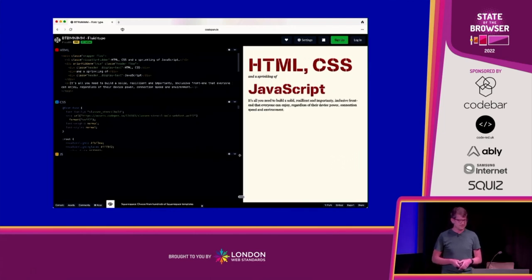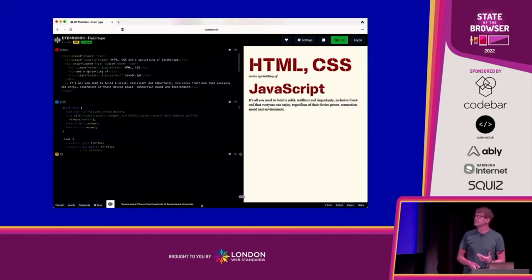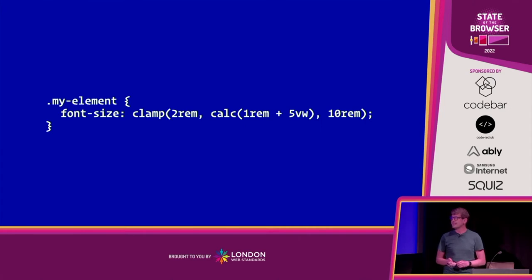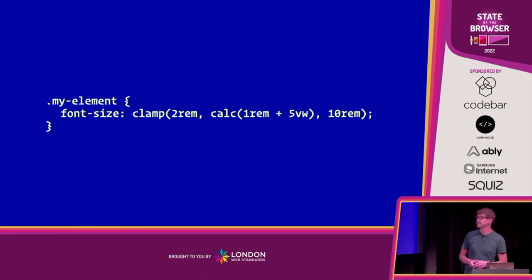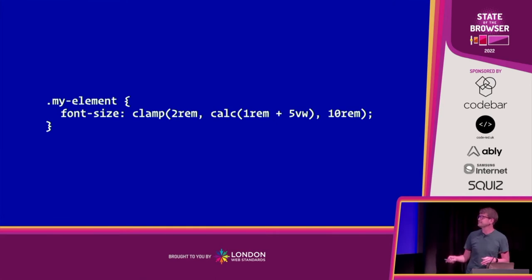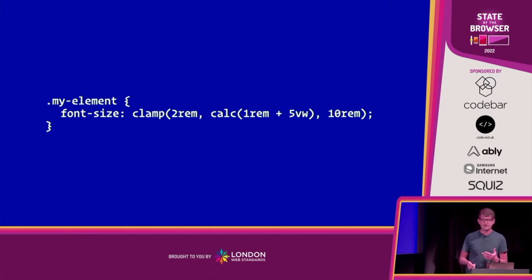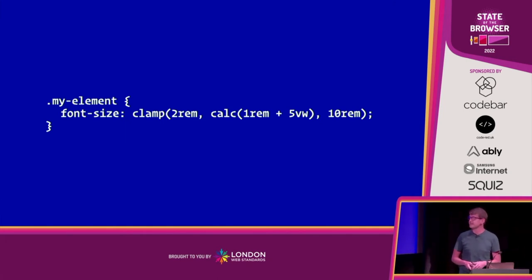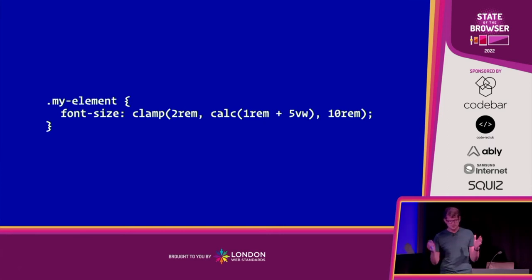There's an easier way: fluid typography based on the viewport size the user has at any given time. The CSS that does it is quite simple — a relatively new feature called `clamp`. You pass three parameters: the minimum size, the ideal size, and the maximum size. The minimum and maximum act like locks — it'll never get smaller than 2rem, never get larger than 10rem. In the middle, you give the browser a hint.